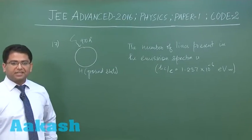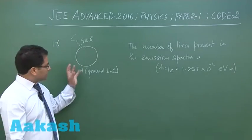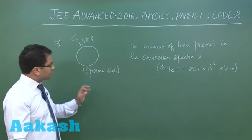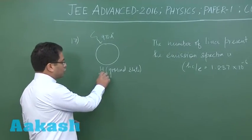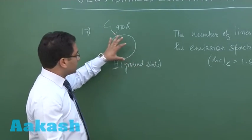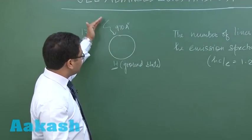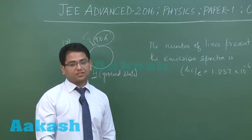Question number 17 is another straightforward question from the topic of modern physics, and more specifically atom—Bohr's hydrogen atom. Here is hydrogen which is at ground state, and this particular hydrogen atom is being irradiated upon by light of wavelength 970 angstrom.